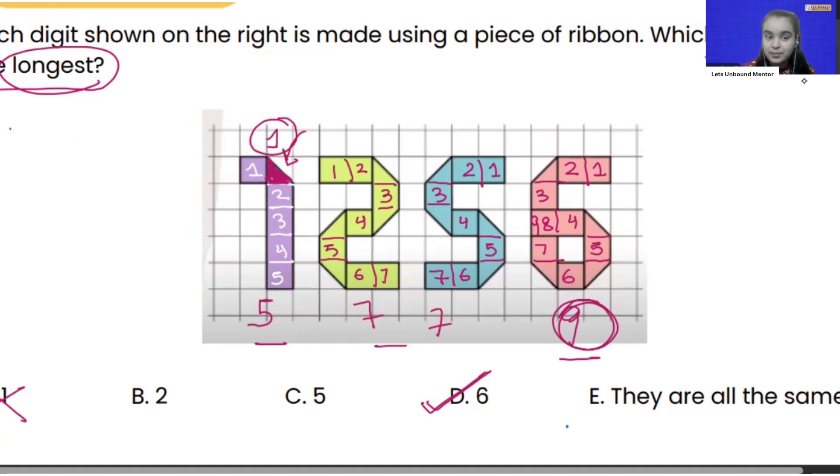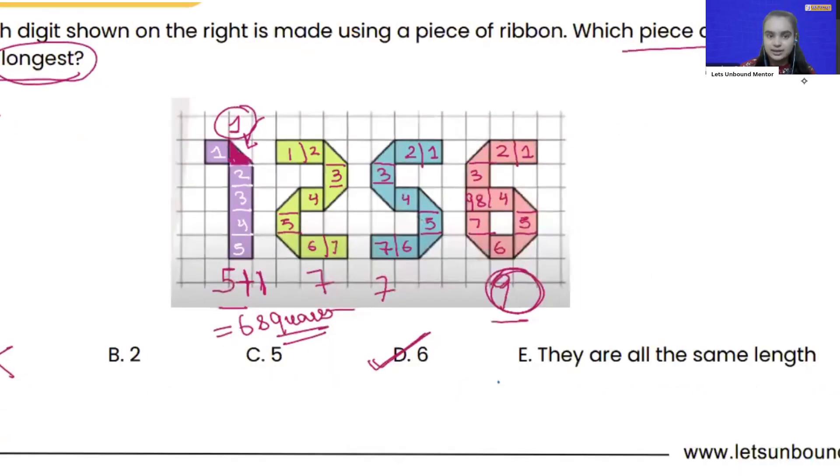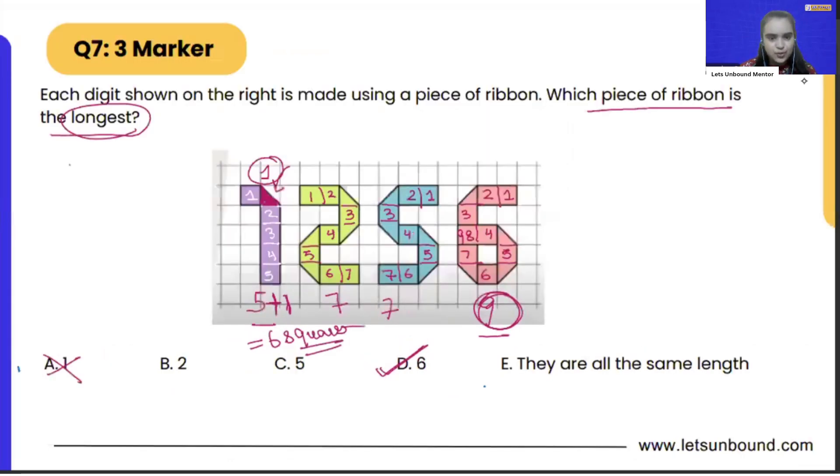So for example, if we talk about number 1, it is made up of 5 plus 1 that is 6 squares. And simultaneously you can do for the other digits as well. But if you don't want to do it, just split up the shape into square pieces. That is the easiest way you can apply here. And you can easily get your answer that is 6 which is made up of 9 full squares. But yes, again, if you want to count these pieces, the triangular pieces, you can count 1, 1 for each. Then also you will be able to get the same answer.